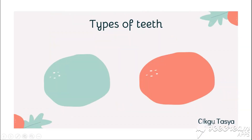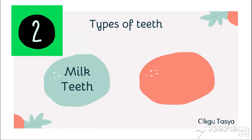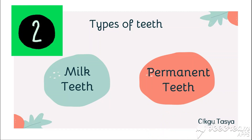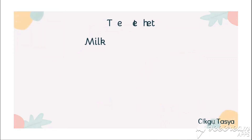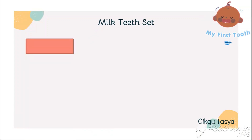From that conversation, we know that humans have two types of teeth: milk teeth and permanent teeth. We're going to go through both of these now.